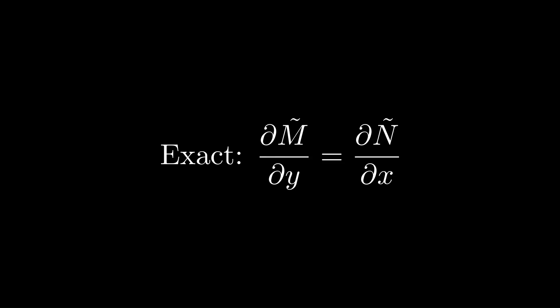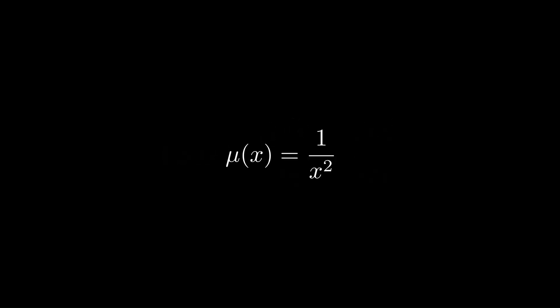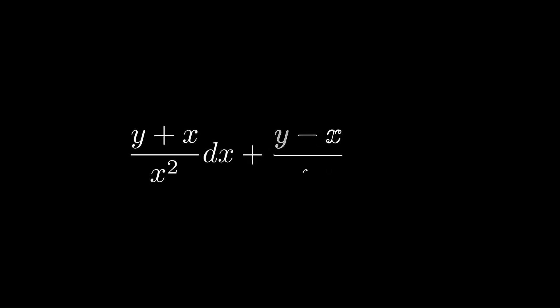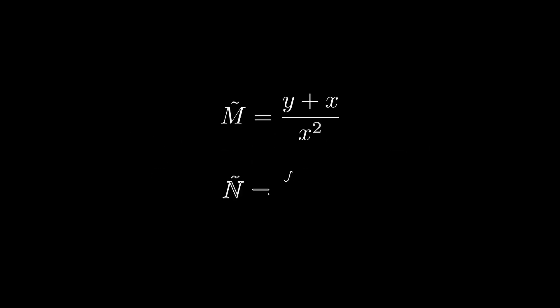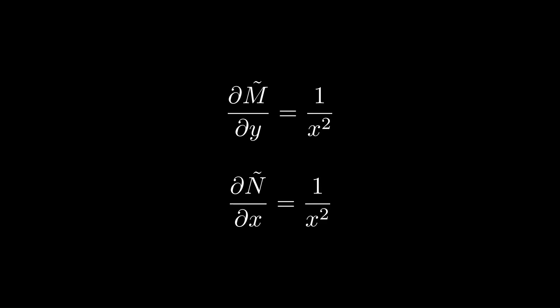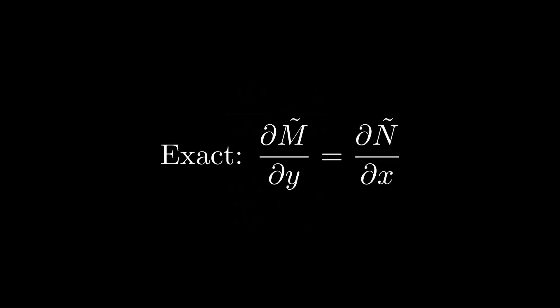To handle this, we transform M and N into M̃ and Ñ by multiplying by an integrating factor. We try 1/x². While it's difficult to determine this factor elementarily — and usually it's provided — applying 1/x² makes the partial derivatives of M̃ and Ñ equal, so we now have an exact ODE we can solve normally.